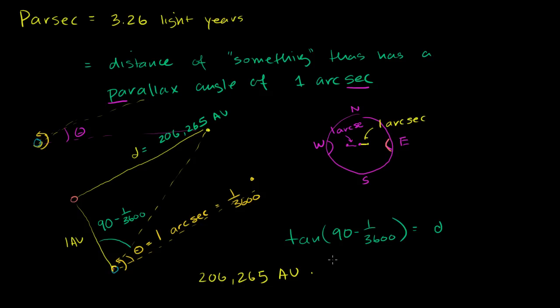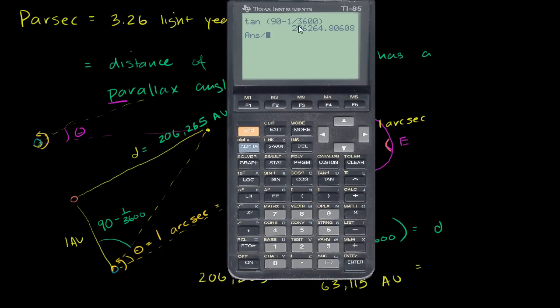And we want this in the numerator and the denominator to cancel out. And so if you divide 206,265, this number up here, divided by 63,115, the number of astronomical units in a light year.